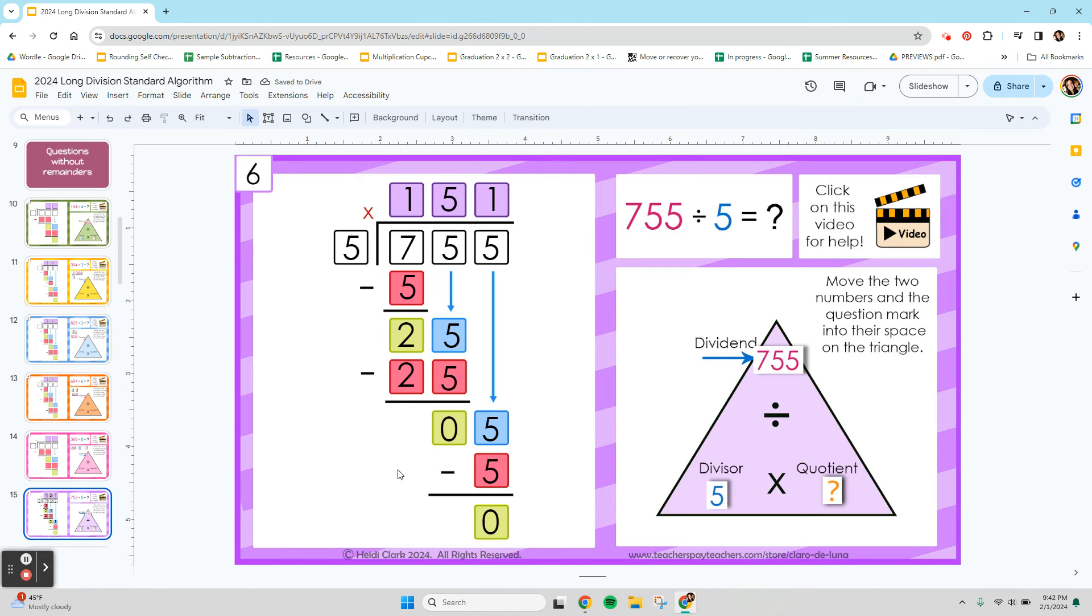which means there's no remainder, which means it fits in perfectly. Which means if you had 755 pennies, and you put them into 5 groups, you would have exactly 151 in each group, with none left over. No remainder. That's why you have the 0 at the bottom.